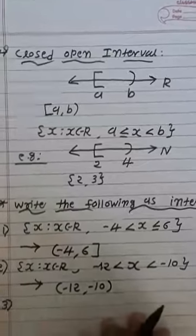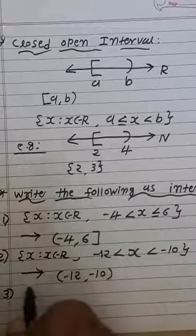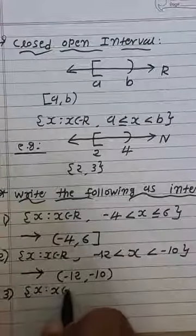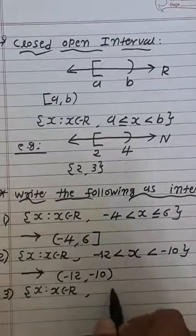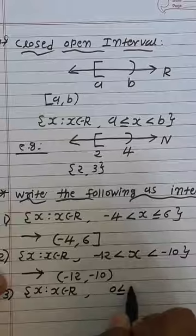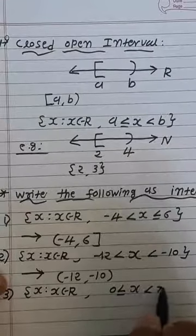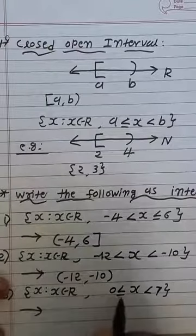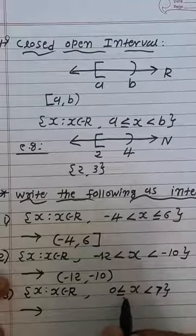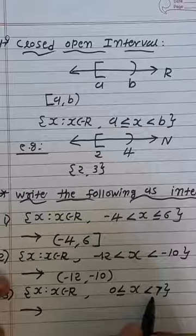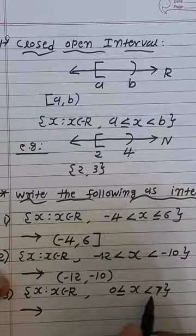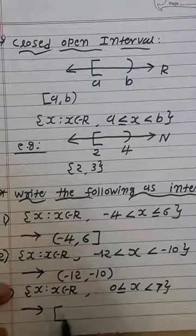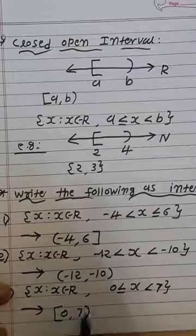Third question: {X | X belongs to R, 0 ≤ X < 7}. Here on one side less than or equal form is present, and on the other side strictly less than is present. So we represent it as closed-open interval [0, 7).